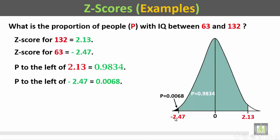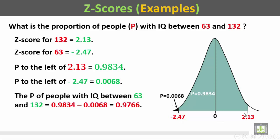If we subtract this whole area minus this area, it will give us the blue part here, which represents the proportion of people whose IQ is between 63 and 132.